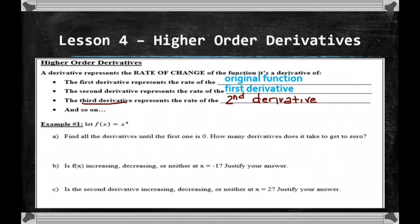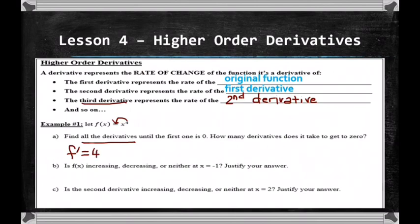Example 1: we start out with f(x) = x⁴. Part A wants us to find all derivatives until the first one is 0. Using the power rule for polynomials, f'(x): the 4 comes down and you subtract 1 from the exponent, so it becomes 4x³. That's your first derivative.